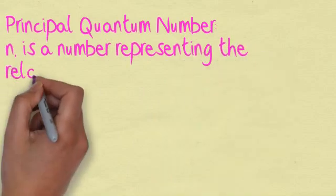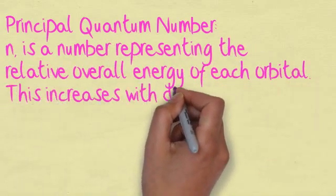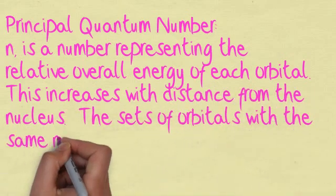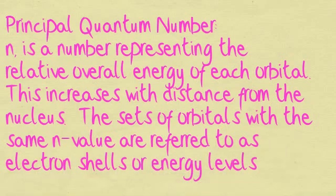The principal quantum number, n, is a number representing the overall energy of each orbital. This increases with distance from the nucleus. The sets of orbitals with the same n value are referred to as electron shells or energy levels.